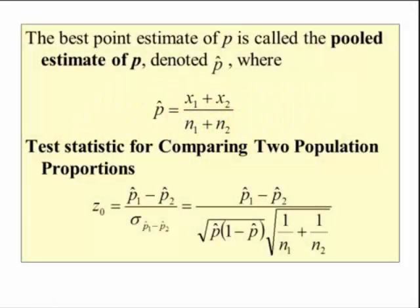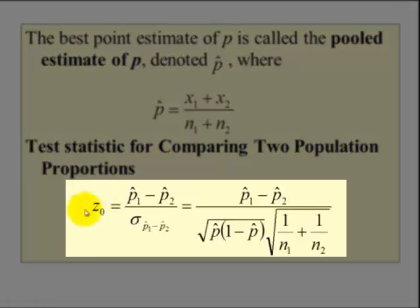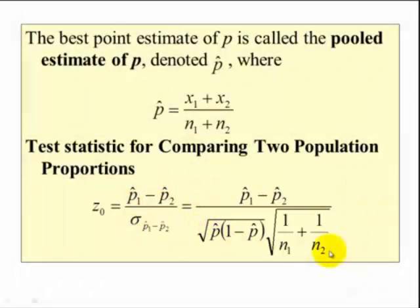The test statistic for comparing the two population proportions is a z. And here's the formula which breaks down to this. We're not going to compute this by hand. We're going to let Minitab and StatCrunch compute this for us.